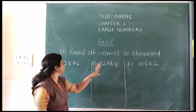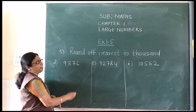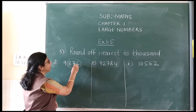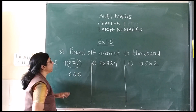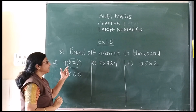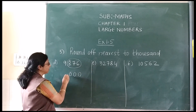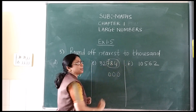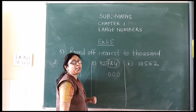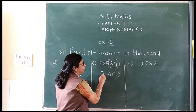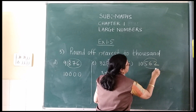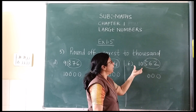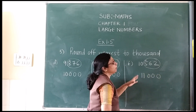Now let's see round off nearest to 1000 for D, E and F sums. 1000 has 3 zeros, so circle 3 digits and place 3 zeros. The first number in the circled digit is 8, which is more than 5, so add 1 to the outside number: 9 plus 1 = 10. For E, circle 3 digits, place 3 zeros. The outside number is 32 — add 1, so 32 becomes 33. For F, circle 3 numbers, place 3 zeros. The first number in the circle is 5, so add 1: 10 becomes 11.